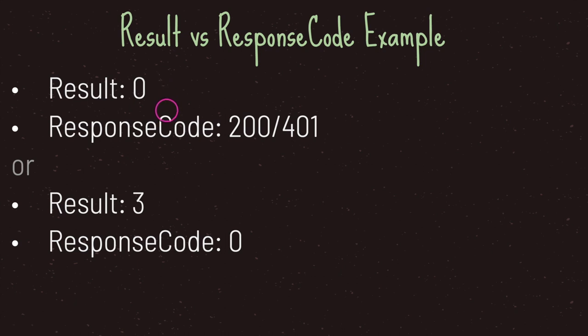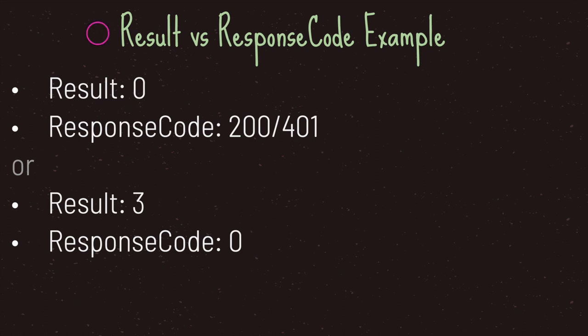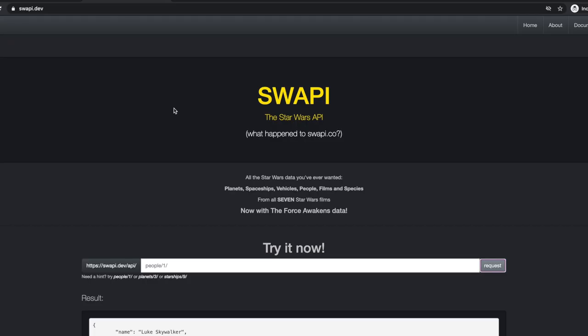Let's take a look at a second example. If we send a request to something that doesn't exist, our result will be three, meaning the server cannot be resolved. And even though it cannot be resolved, our response code in this case will be zero. So if you want to do something special for your players, you will do that based on the response code enumeration value versus the result enumeration value. The result enumeration value is useful for knowing whether or not we have connected to the server. The response code lets us know how the server responded to our request, whereas the result enumeration lets us know whether or not we did in fact connect to a server.